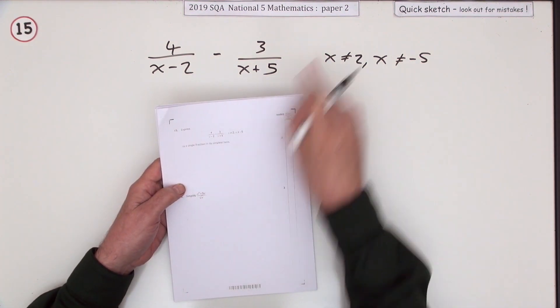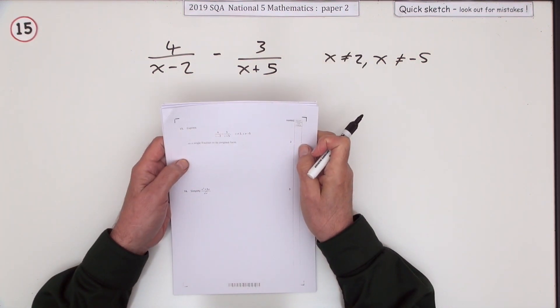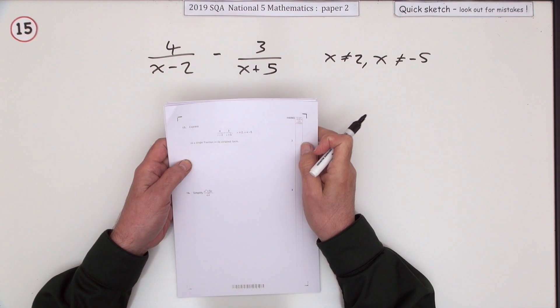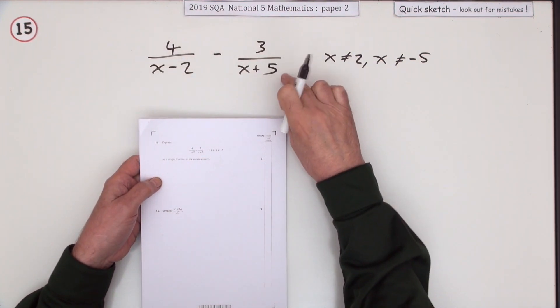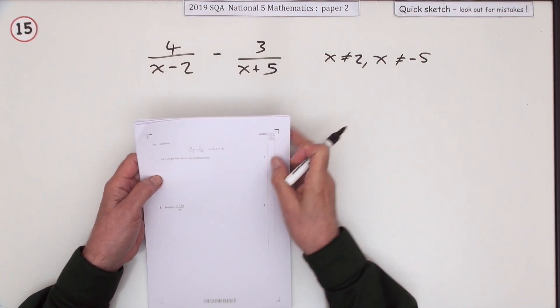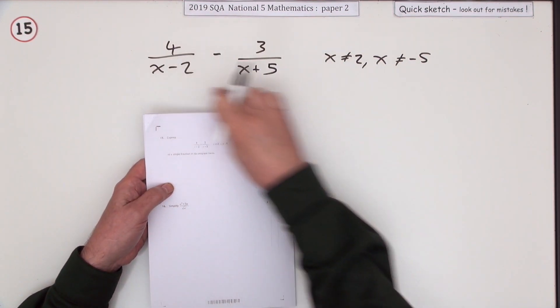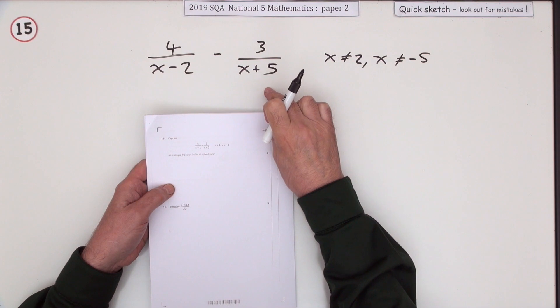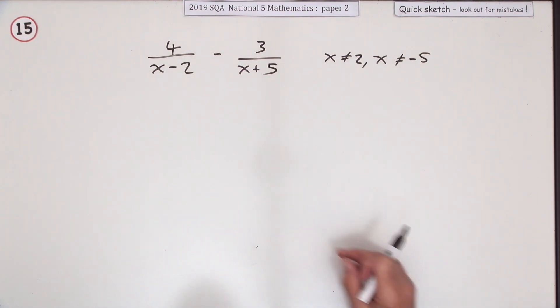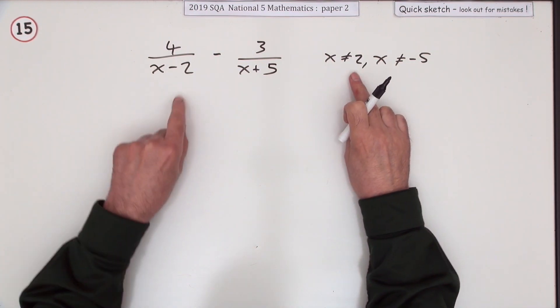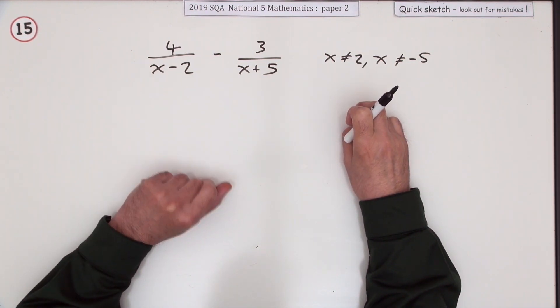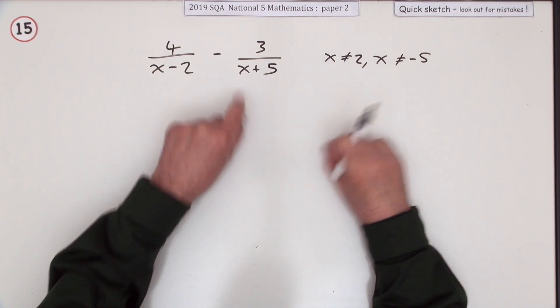Number 15 from paper 2 of the 2019 National 5. Three marks for simplifying these algebraic fractions. Express this as a single fraction in its simplest form. Don't worry about that restriction - that's just mathematical legalese that says you can't divide by zero, so X can't be 2 or negative 5.